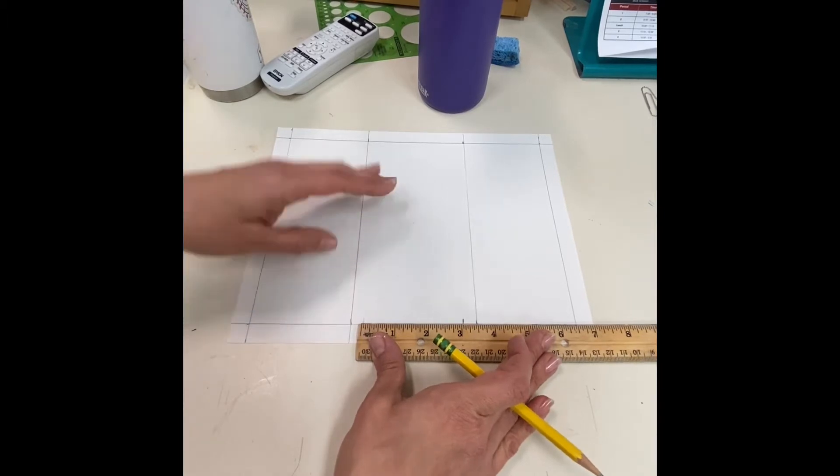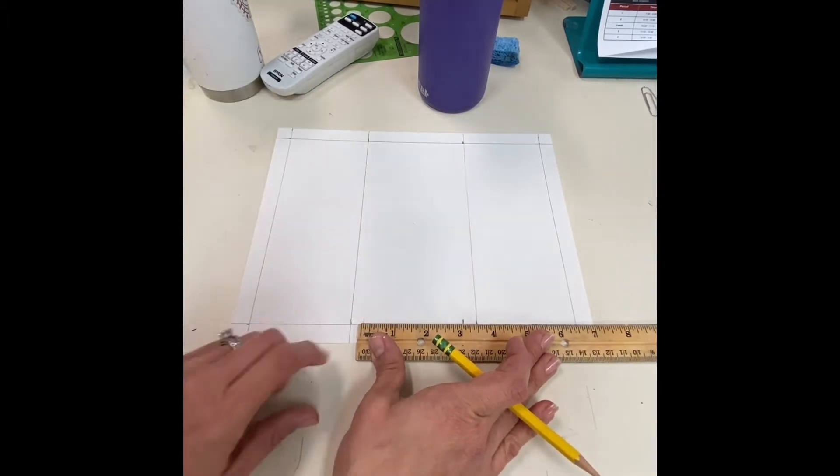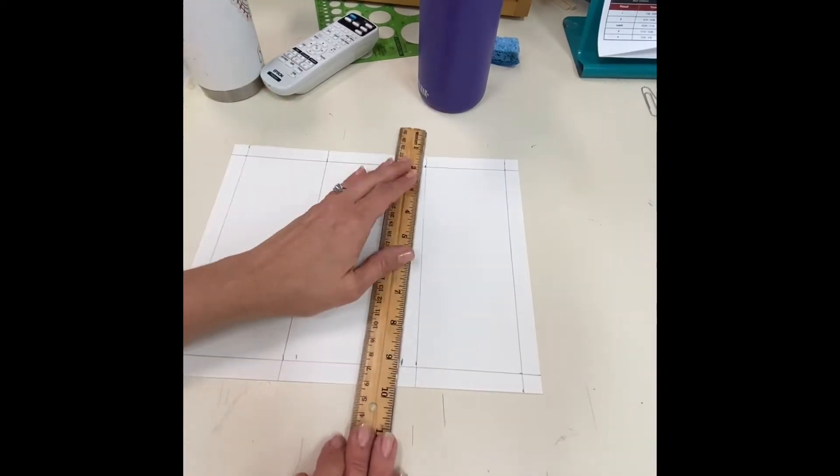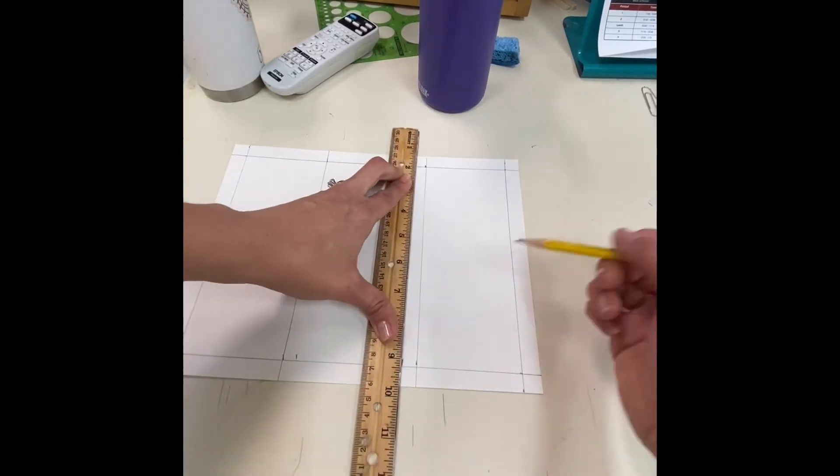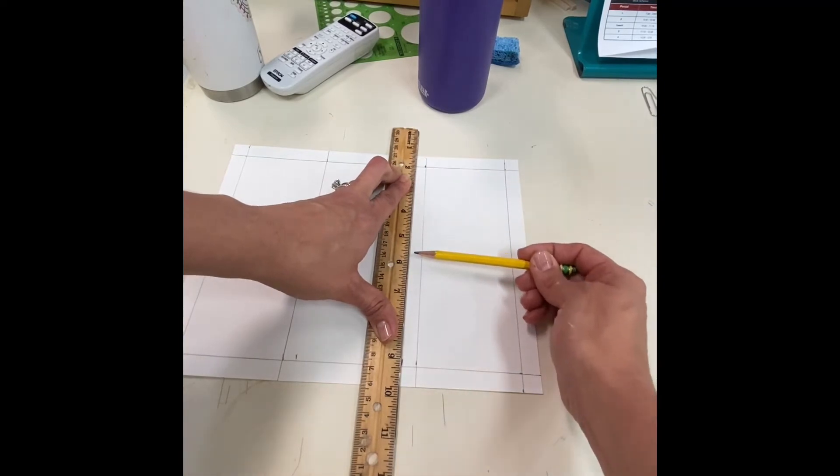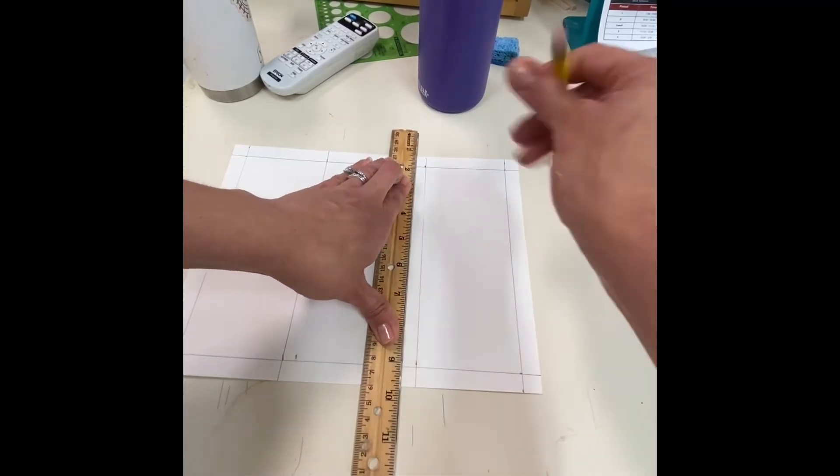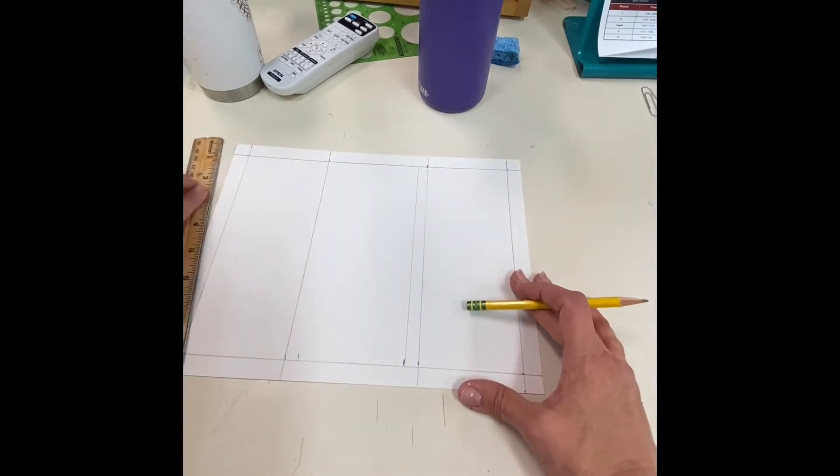It is not important if your boxes are perfect or exactly even, but as long as you have roughly the same amount of space on all three columns. Again, this does not have to be exact. Please try to get as close as you can.